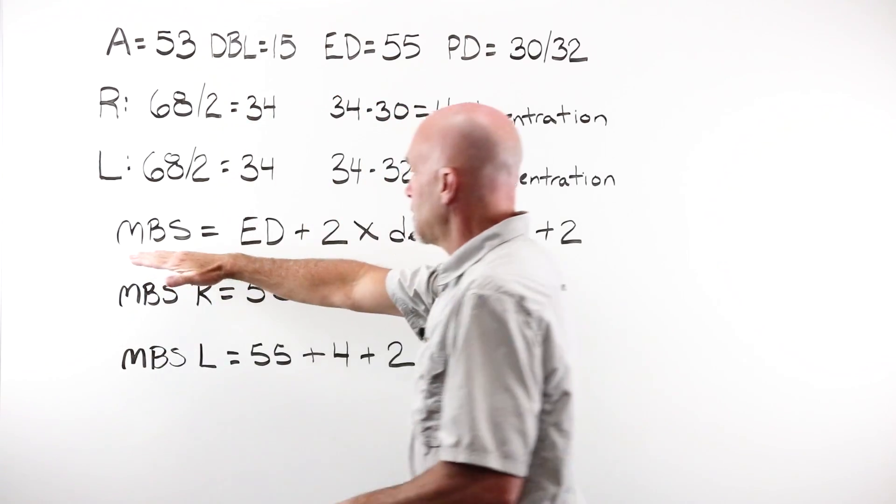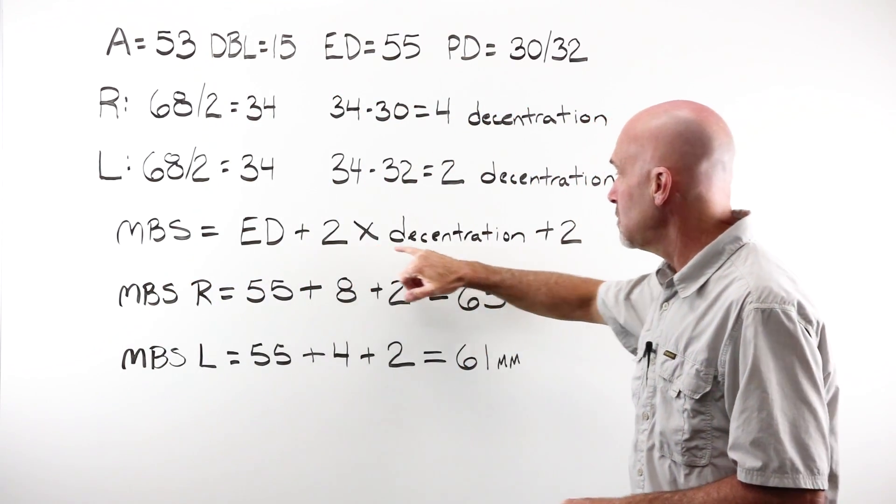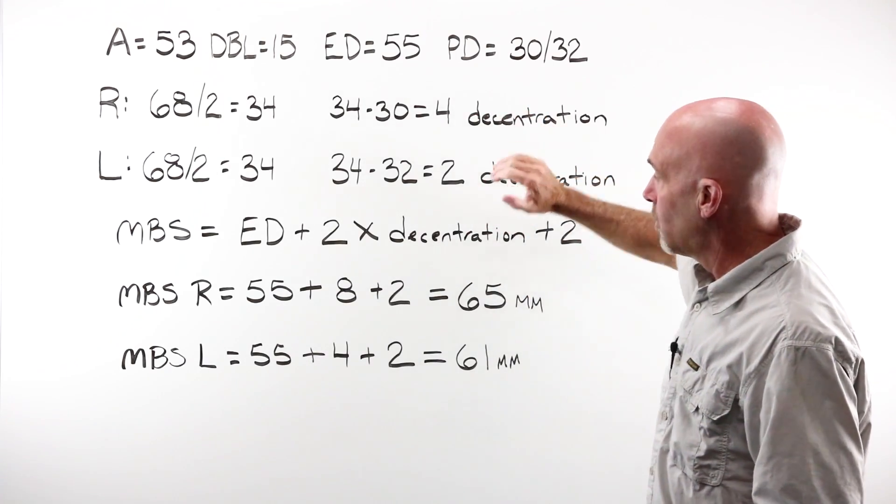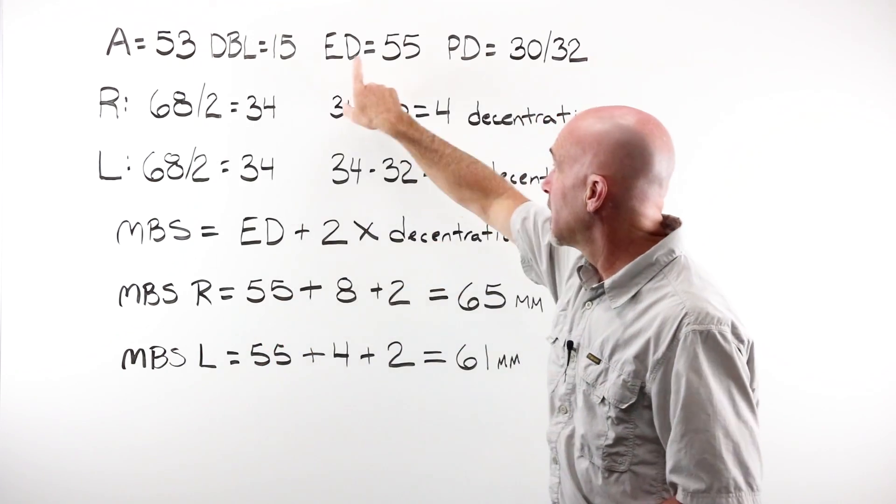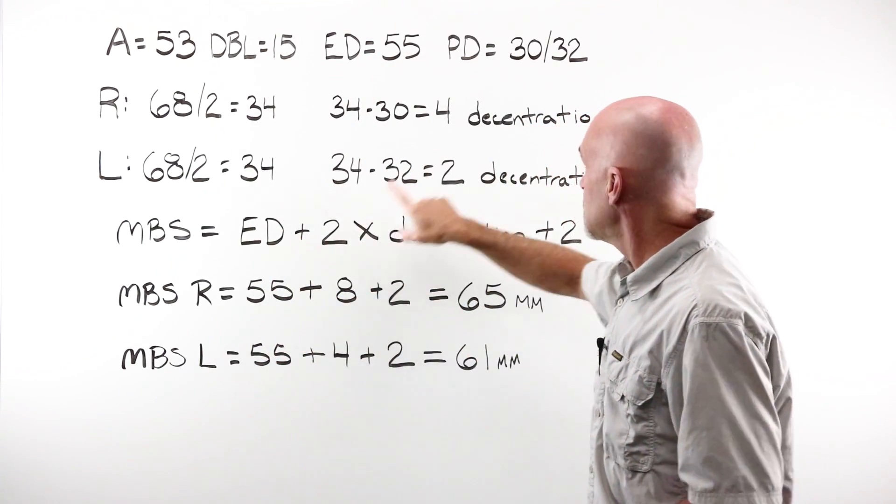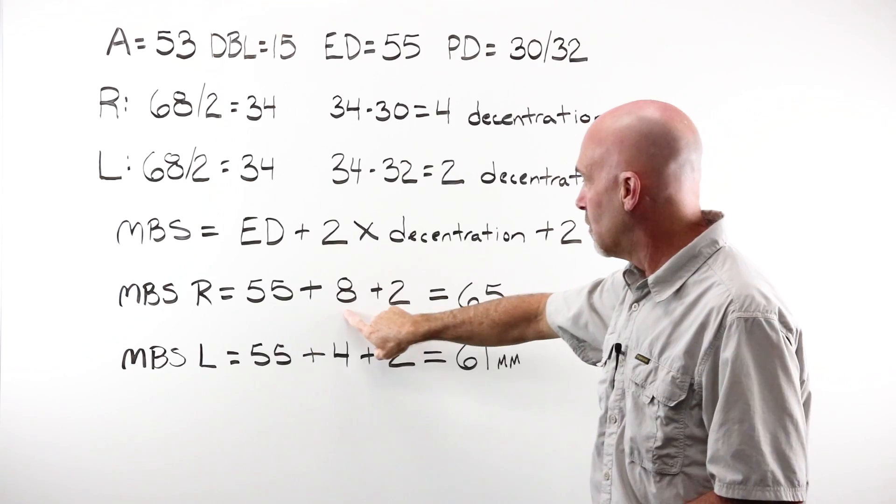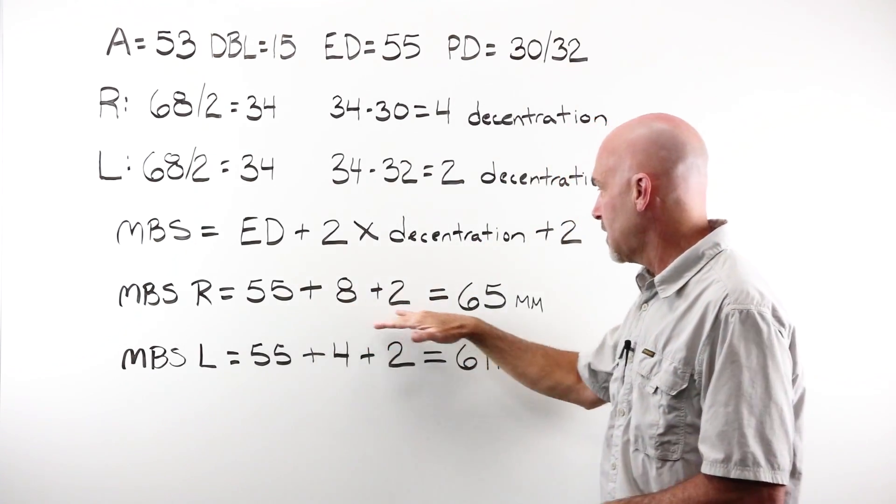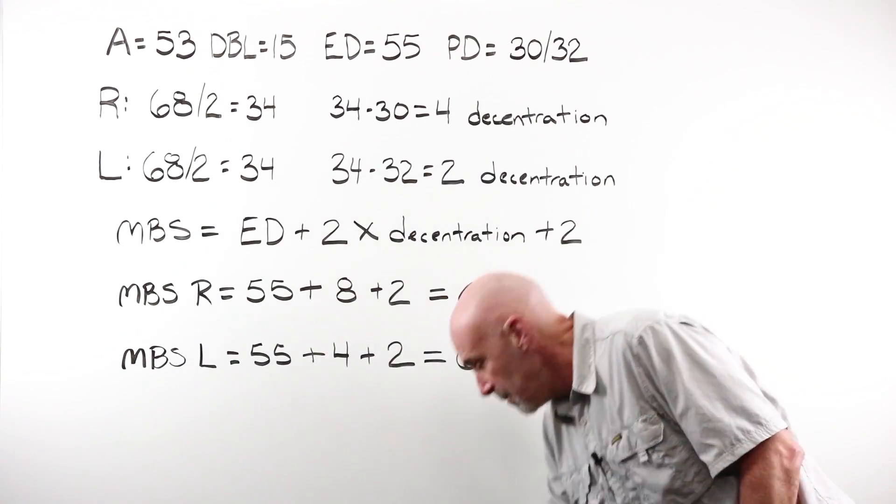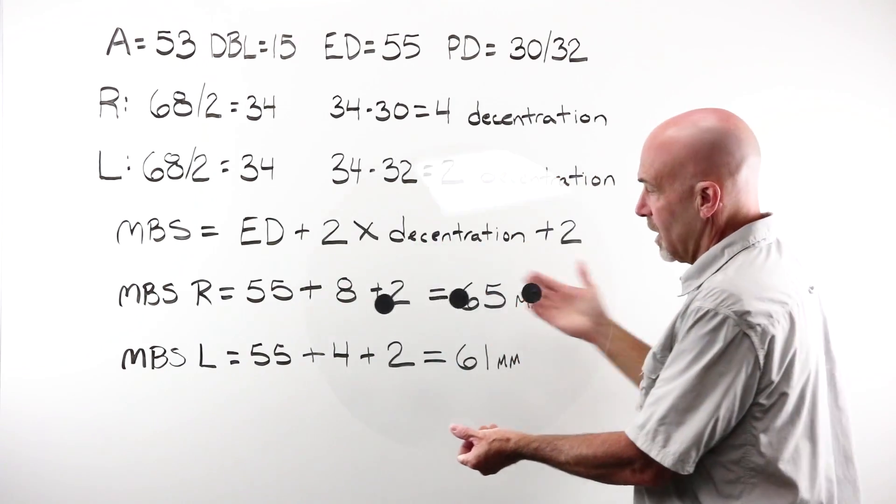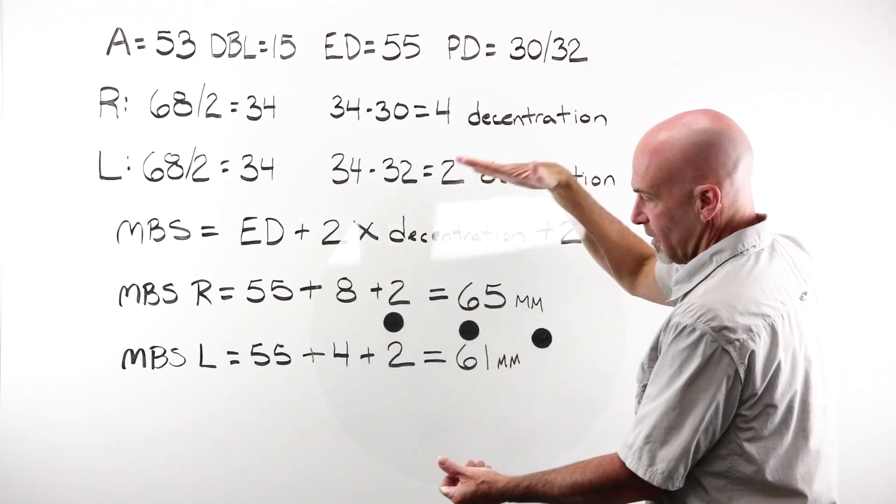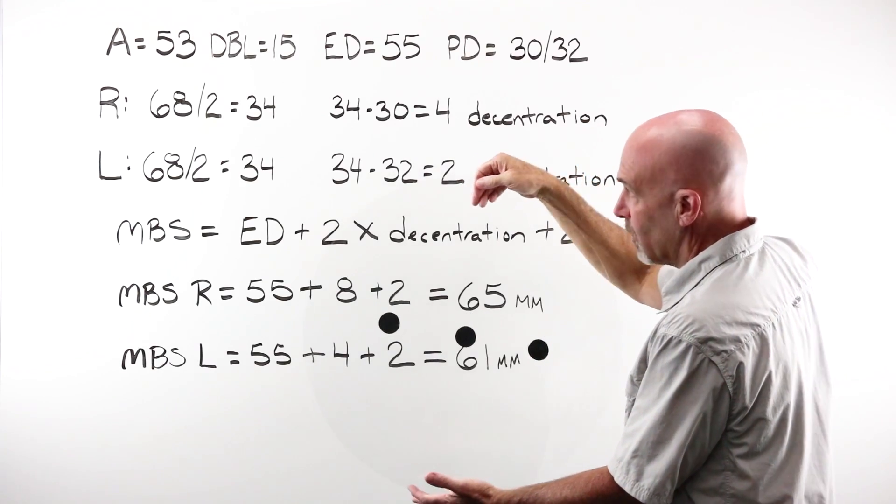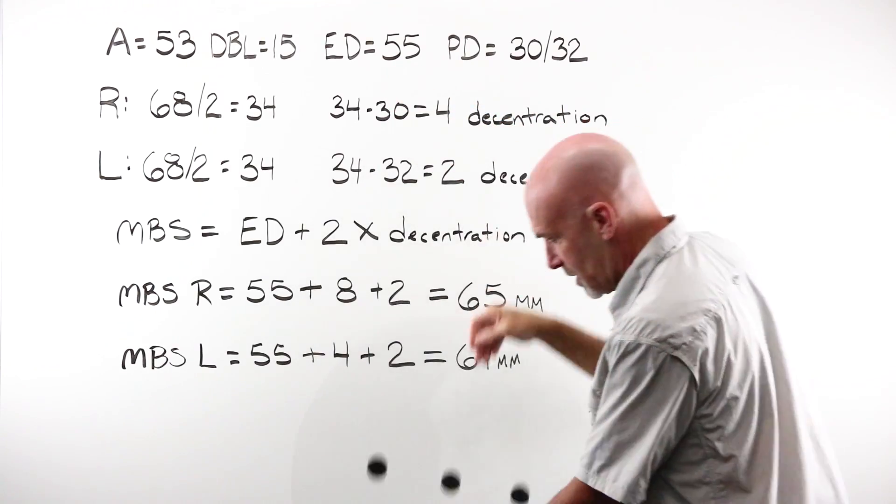My formula for MBS, which I just showed you, is ED plus two times the decentration amount, plus two. So for my right eye, I've got my ED of 55, two times my decentration of four, which is eight, and my two. So 55 plus eight plus two would mean that I need a blank 65 millimeters wide, 65 millimeters across, in order to get the cutout I needed for this particular frame in this particular wearer.